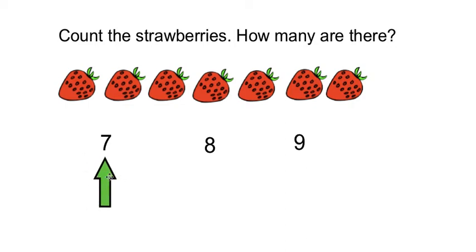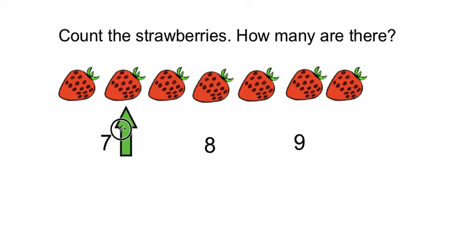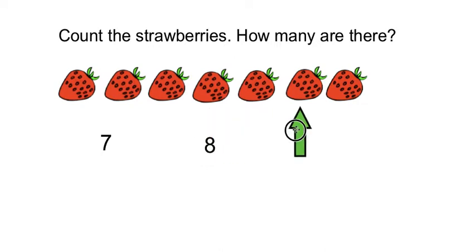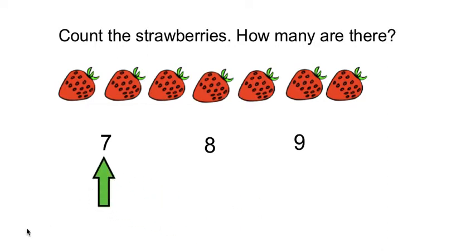Let's double check to make sure that we counted the correct amount of strawberries. Let's count again. Ready? 1, 2, 3, 4, 5, 6, 7. There are 7 strawberries.